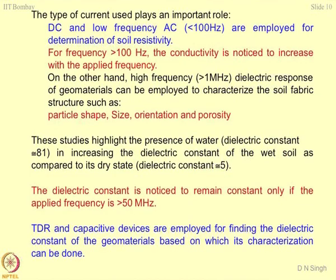The type of current used in analysis plays an important role. DC and low-frequency currents less than 100 Hz AC are employed for determination of soil resistivity — most resistivity surveys use low AC current or DC current and are not very expensive. For frequencies more than 100 Hz, conductivity is noticed to increase with applied frequency.